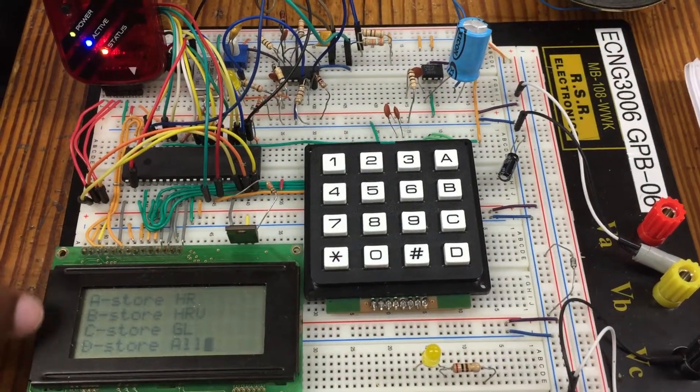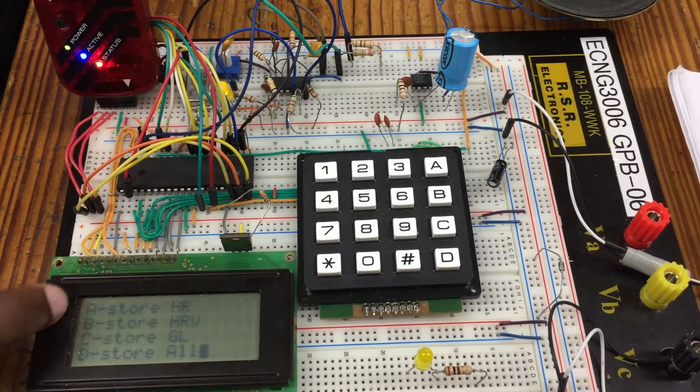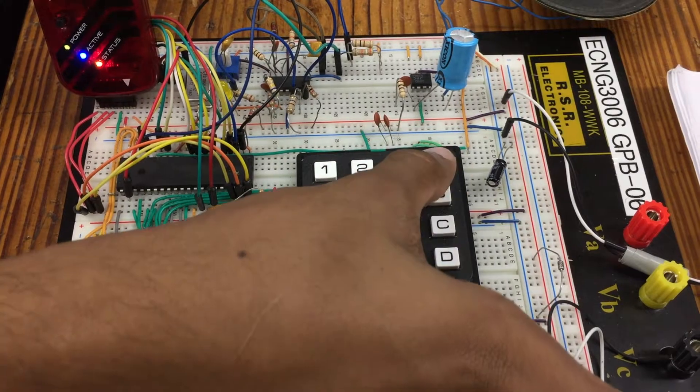it'll come here and ask you which values you want to store to the memory. So for this example, we'll go and store each area alone, which is H3, so we'll press A.